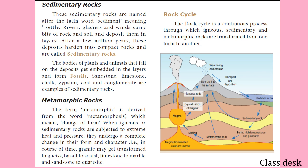Now the rock cycle. Igneous rock, sedimentary rock, and metamorphic rock are continuously changing from one form to another. This continuous process is called the rock cycle. The rock cycle shows how rocks are interrelated and continuously transformed.